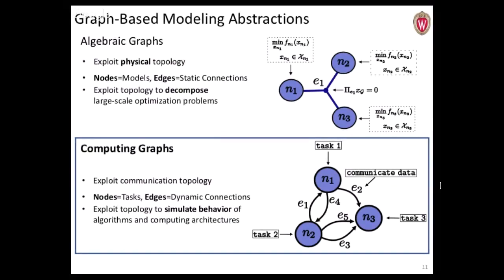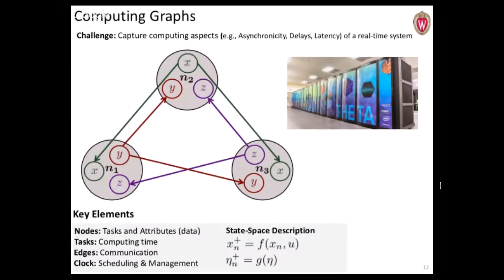I talked about how we use algebraic graphs to model and solve big system optimization problems. Now I want to show how we can develop a decomposition algorithm and simulate how it might actually work on a real-time system. The key difference with computing graphs is that instead of associating optimization models with nodes, we associate dynamic tasks. A task could be a function — it could solve a JuMP model — and nodes communicate information to other nodes in the form of data. We want to simulate the behavior of an algorithm on different computing architectures.